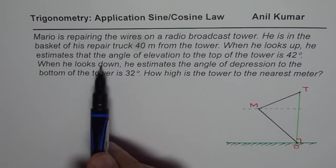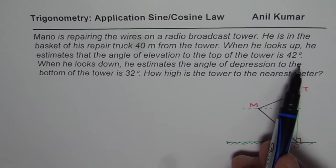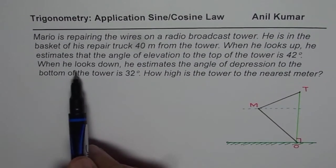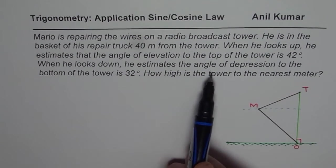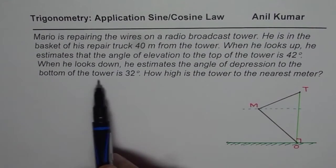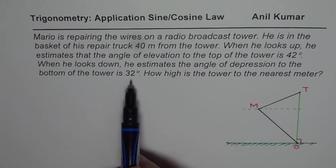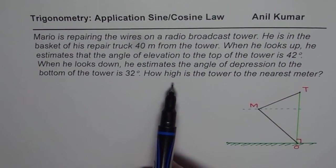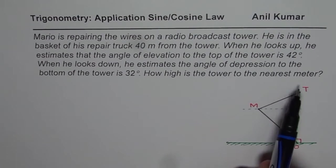When he looks up, he estimates that the angle of elevation to the top of the tower is 42 degrees. When he looks down, he estimates the angle of depression to the bottom of the tower is 32 degrees. How high is the tower to the nearest meter?